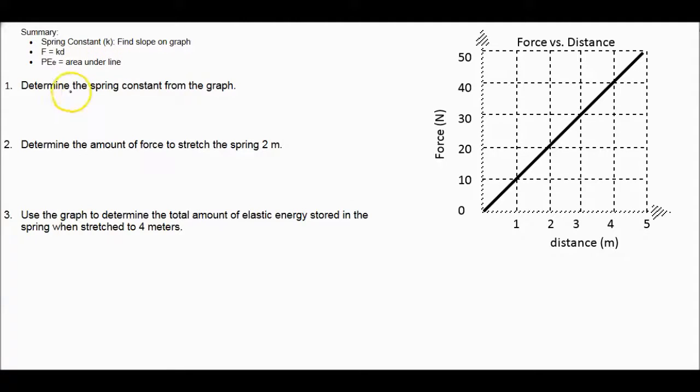So let's look at first determining the spring constant from the graph. To do that, we just find the slope. To find slope, you choose two points. I'm going to choose 0, 0 where this apparently intersects and this last point over here. So this is 0, 0 and this is 5, 50.